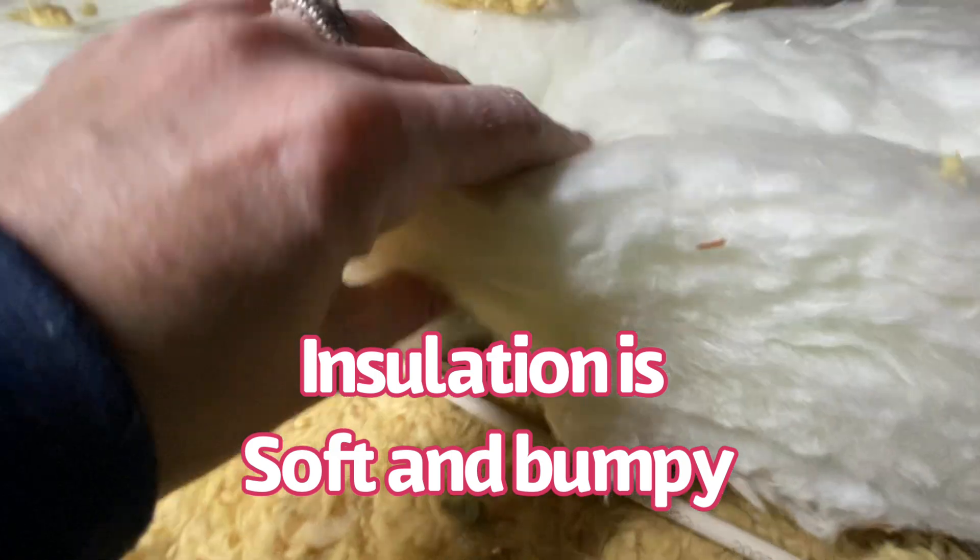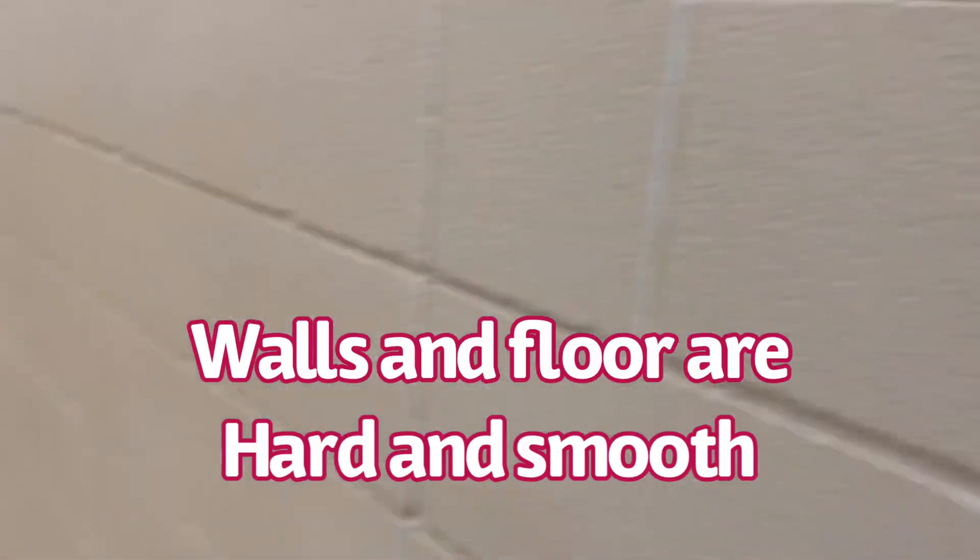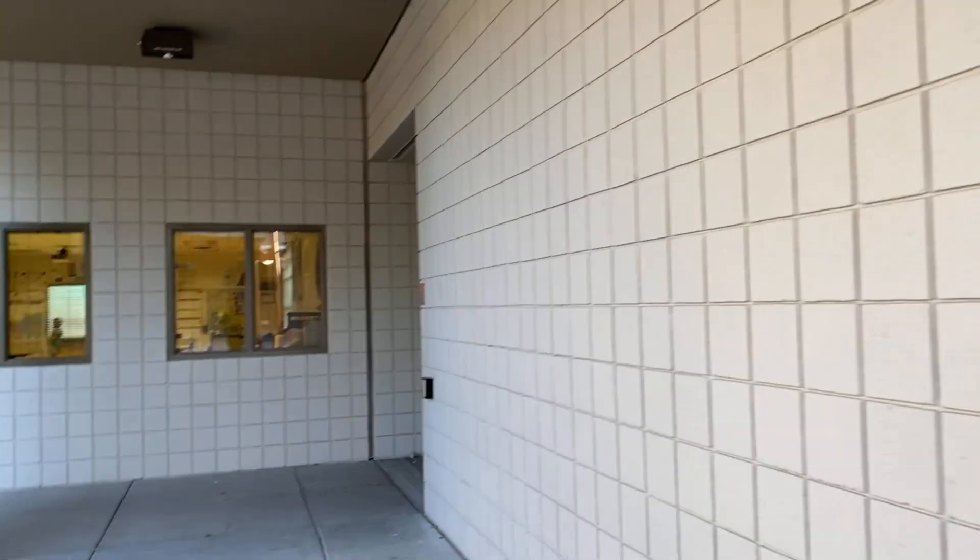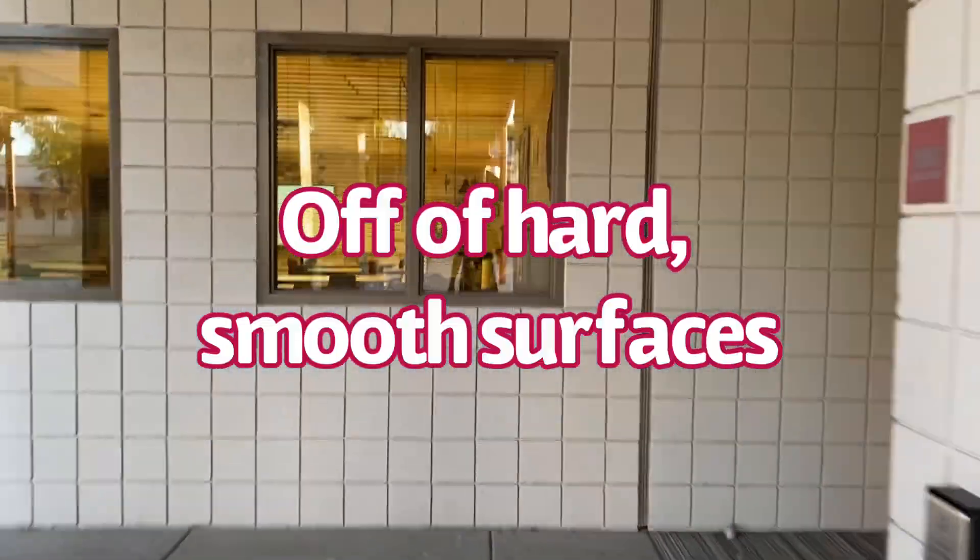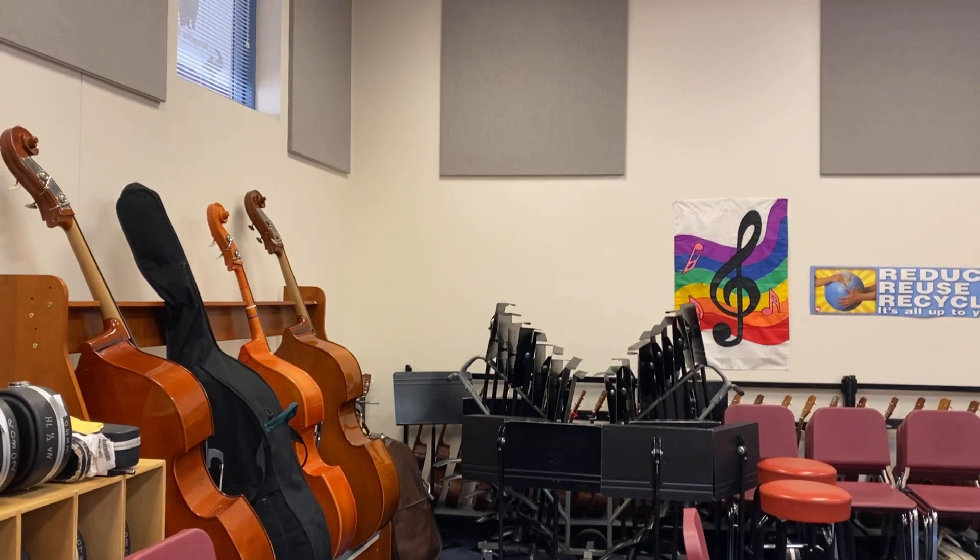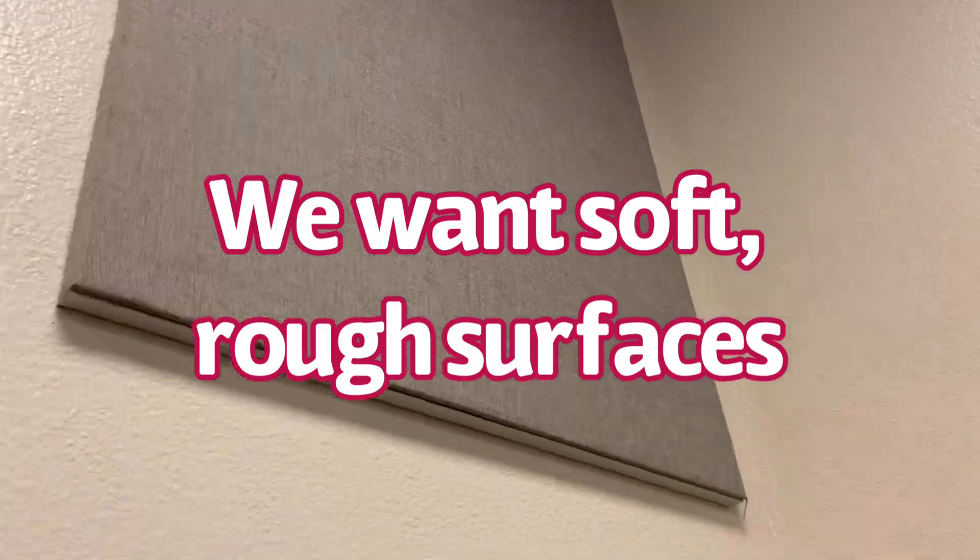So remember the attic? Soft, squishy insulation. No echo. But in this hallway, hard, smooth walls and floor means good echo time. So if we want an echo, we're going to need a place with very hard and smooth surfaces. But if we want sound controlled and we don't want sound to echo, then we're going to need a place that has lots of soft and rough surfaces.